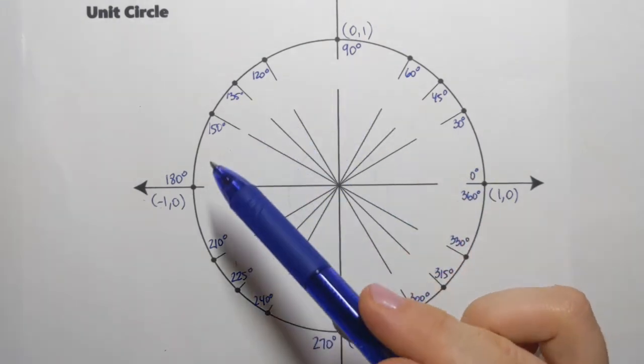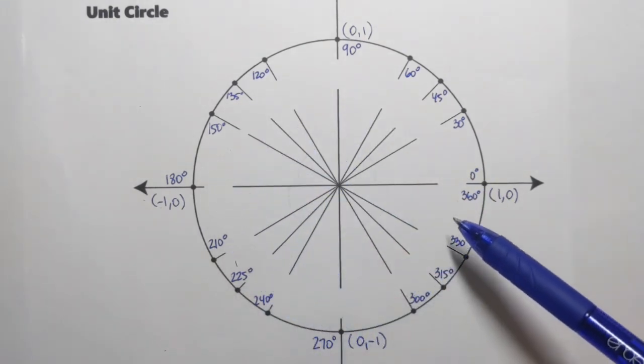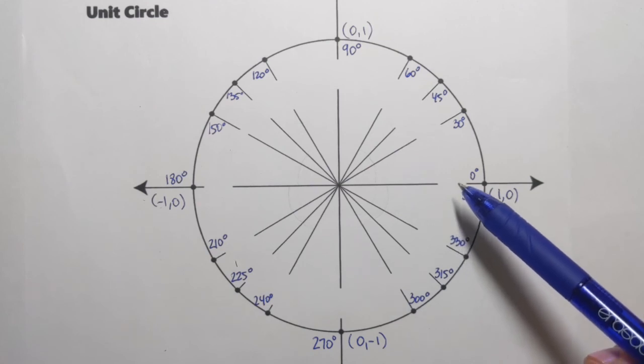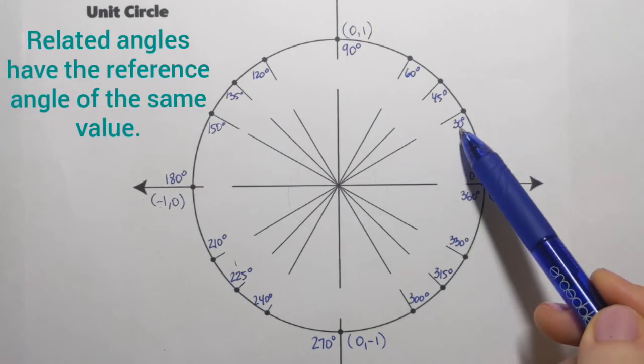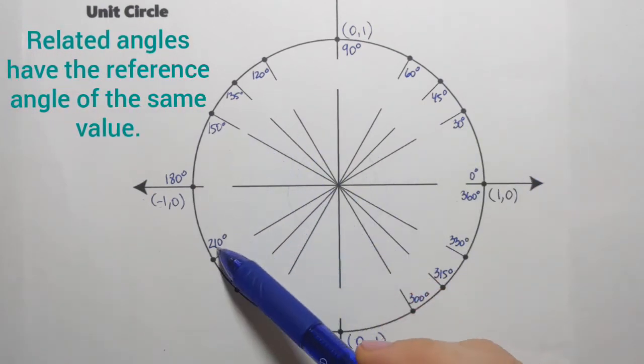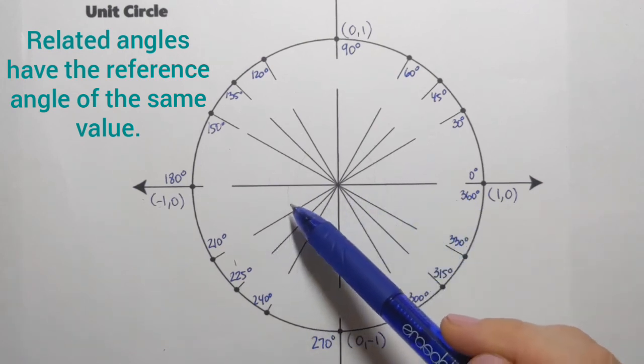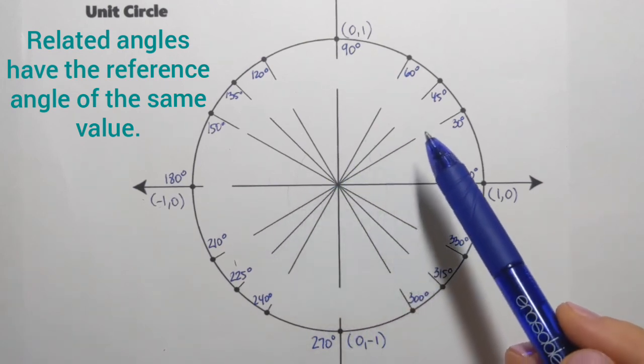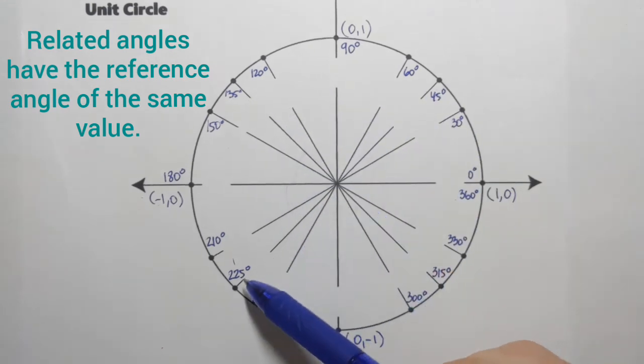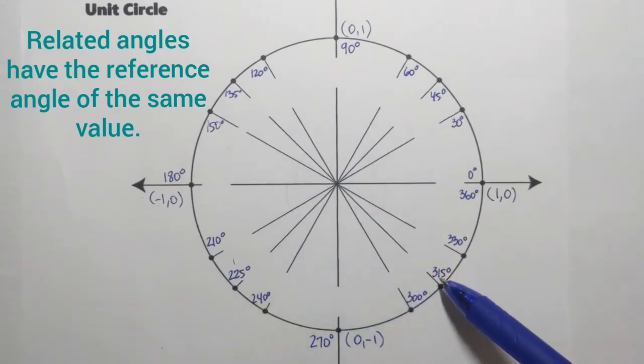So these are the angles that were labeled around the unit circle. And I'd like to point out that angles that have same measure of the reference angle are called related. So for example, 30, 150, 210, and 330 degree angles, they're called related because they have exactly the same measure of the reference angle. For all of them, the reference angle is 30 degrees. And then same idea for 45, 135, 225, 315. These are related angles because the reference angle for all of them is 45 degrees.